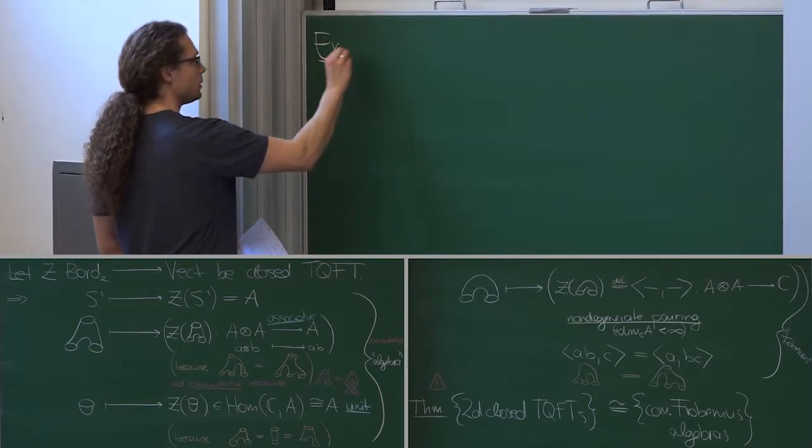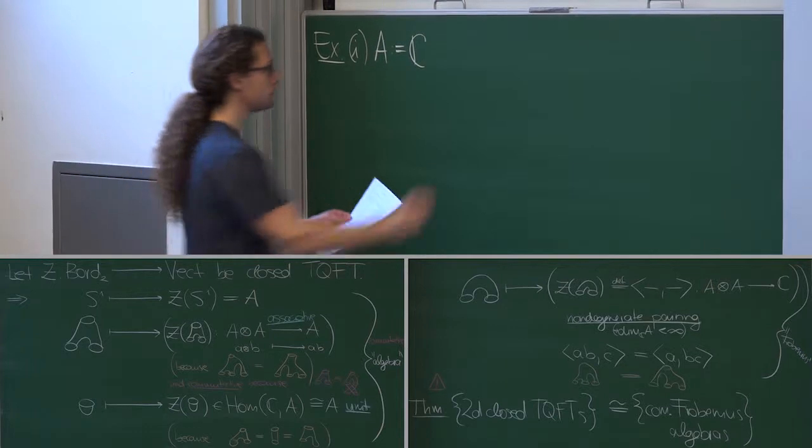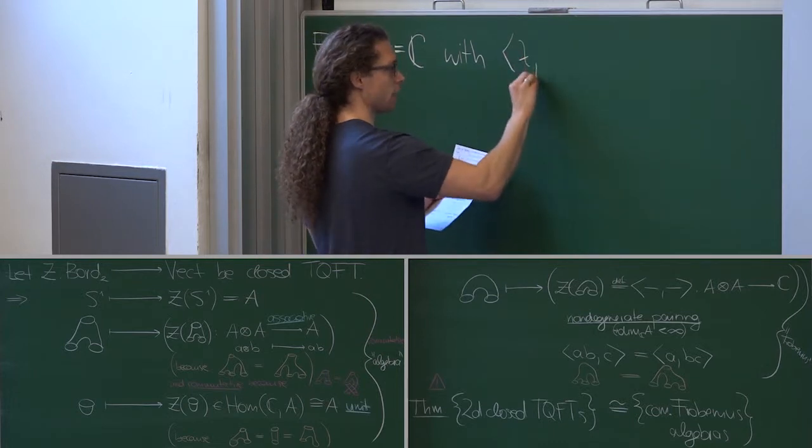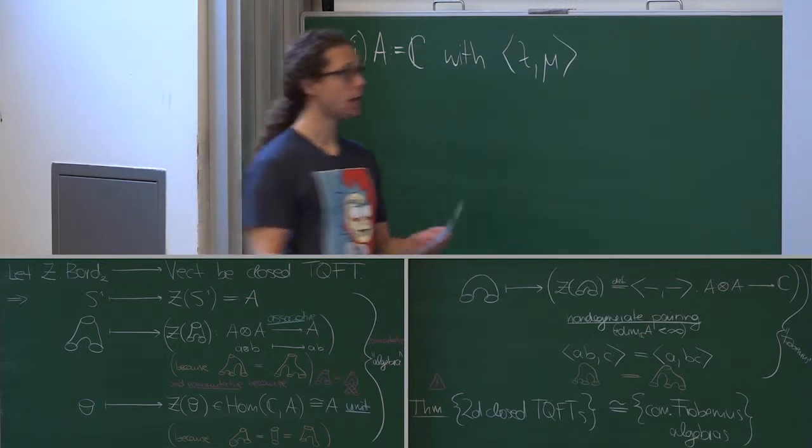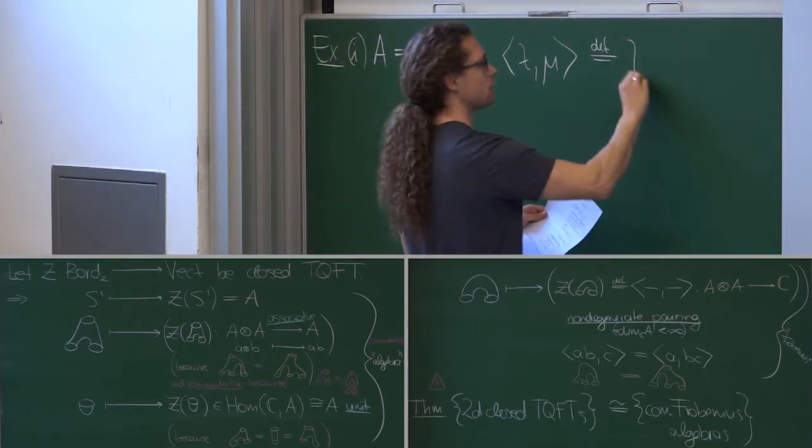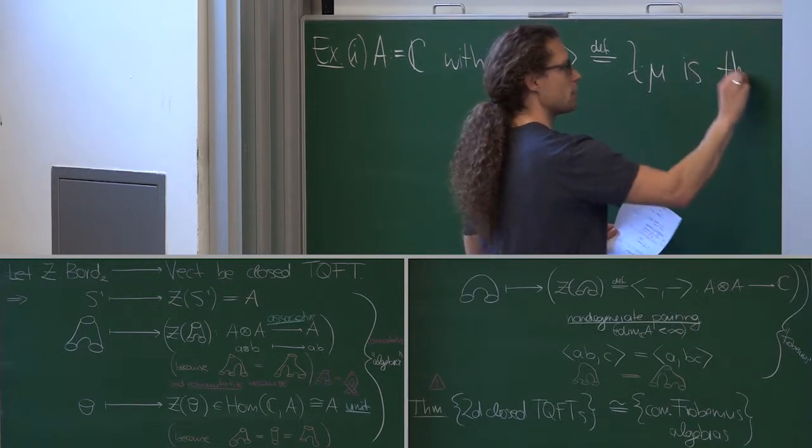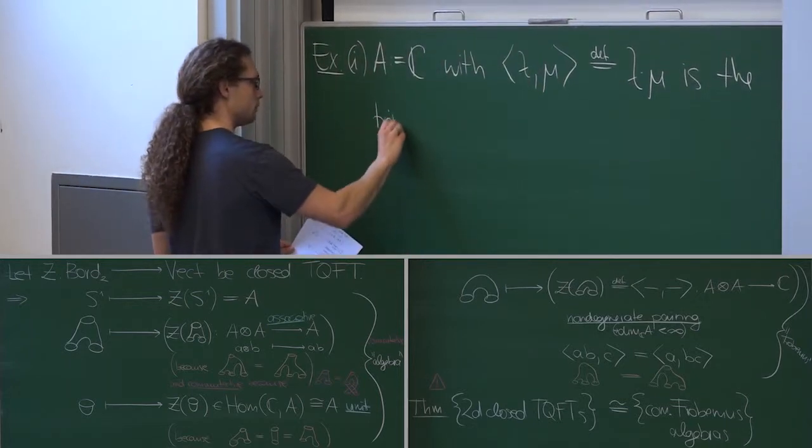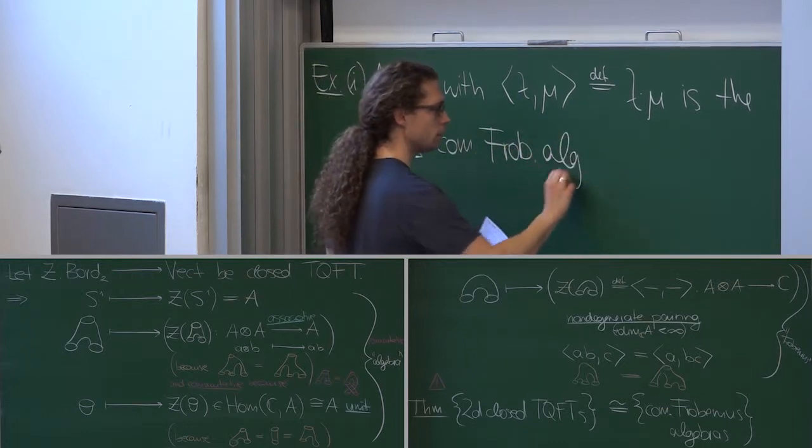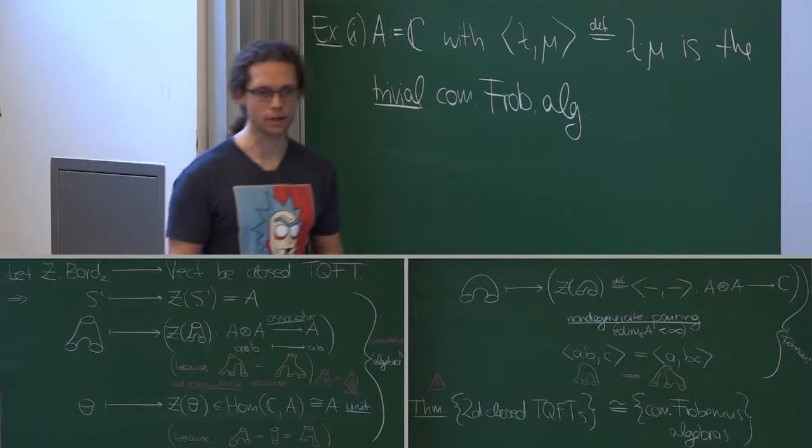So here's the good morning example. Let's take the C vector space C together with a pairing on C tensor C, which takes two vectors lambda and mu, that is complex numbers, and defines this pairing. So this will be valued in C as on the top right corner in the middle board. And unsurprisingly, we choose the product of these complex numbers. That's an element in C. This is the trivial commutative Frobenius algebra. The multiplication is the multiplication in C and so on. Great, example number one.